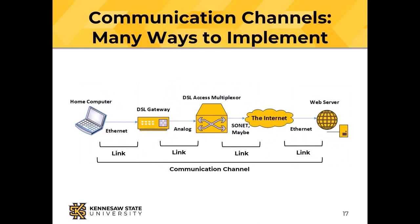A typical home-to-internet connection might go: home computer speaks Ethernet to a DSL gateway or Starlink gateway. In the case of DSL, the connection between the gateway and the DSL access multiplexer is an analog connection.